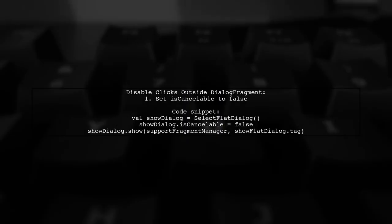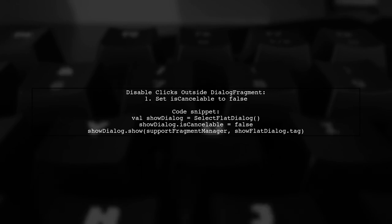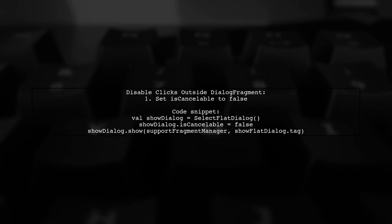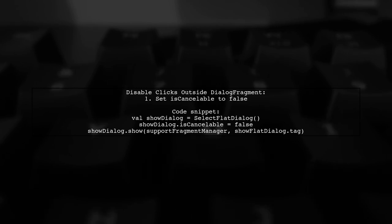To disable clicks outside a dialogue fragment in Android using Kotlin, you can set the IsCancellable property to False. This prevents the dialogue from being dismissed when the user taps outside of it.